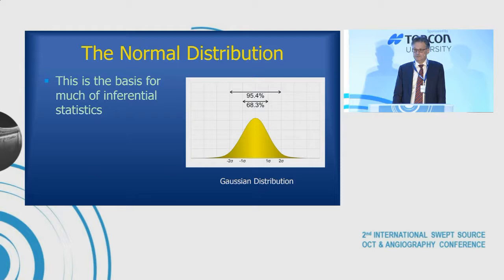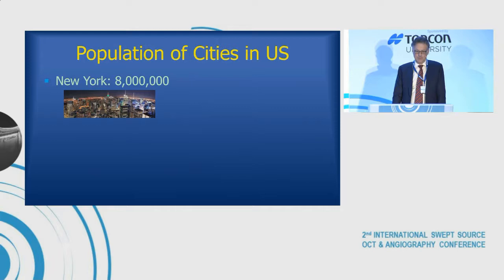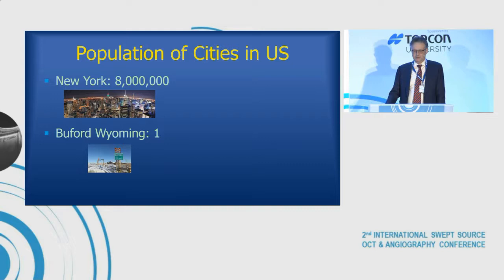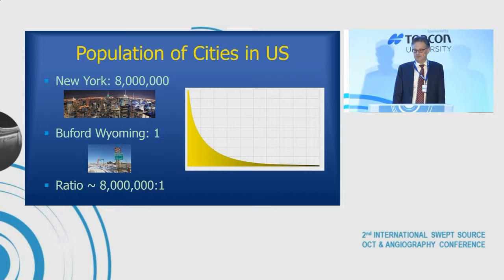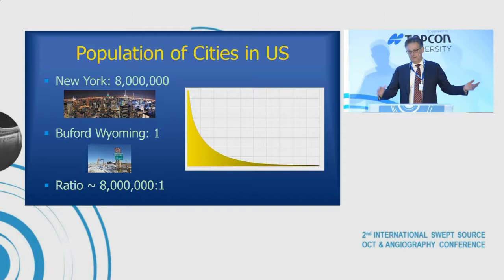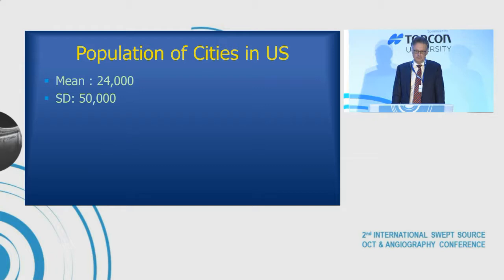If you look at the biggest city in the United States, that's New York City, and if you look at the smallest one, it takes about 25 people to make a town at least, but that ratio is eight million to one. If you plot out the size of cities versus how many there are, it has a kind of strange-looking curve. If we look at the population of US cities and try to figure out the average population, we come out to 24,000 — but curiously the standard deviation is 50,000.